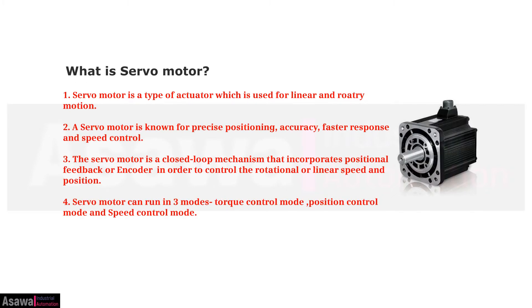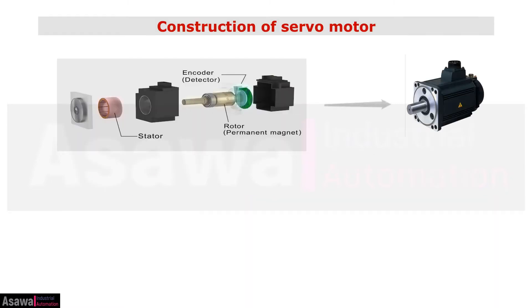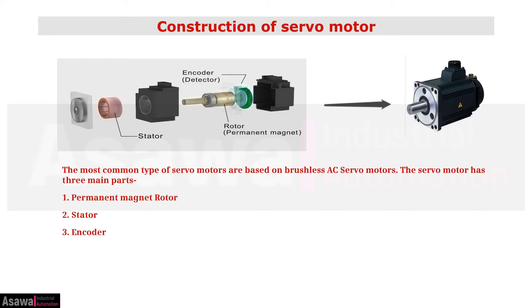First, what is a servo motor? One: a servo motor is a type of actuator which is used for linear and rotary motion. Two: a servo motor is known for precise positioning accuracy, faster response, and speed control. Three: the servo motor is a closed-loop mechanism that incorporates positional feedback or encoder in order to control the rotational or linear speed and position. Four: a servo motor can run in three modes — torque control mode, position control mode, and speed control mode.